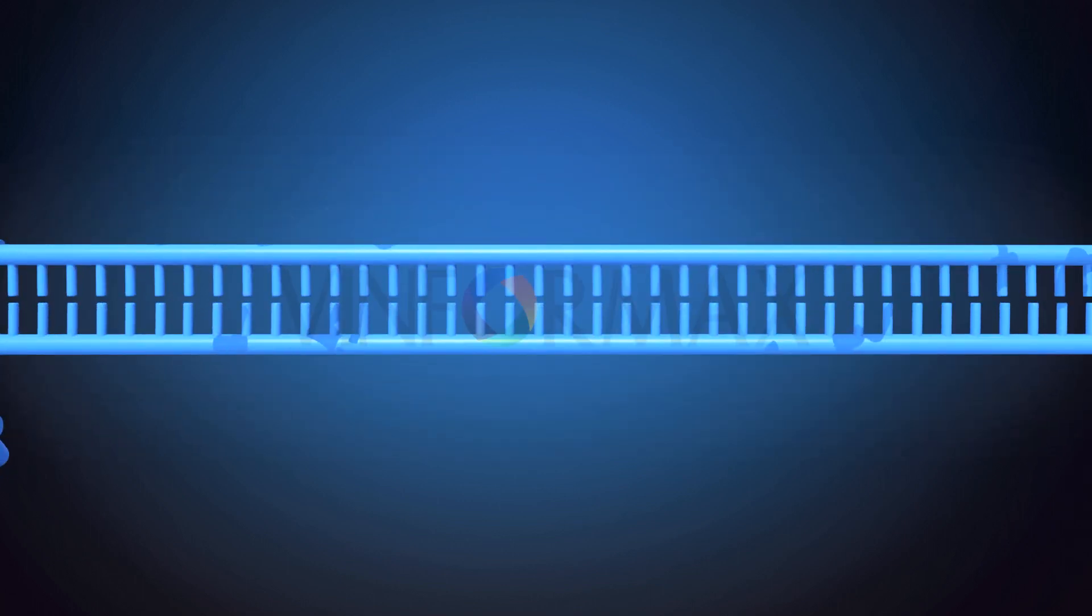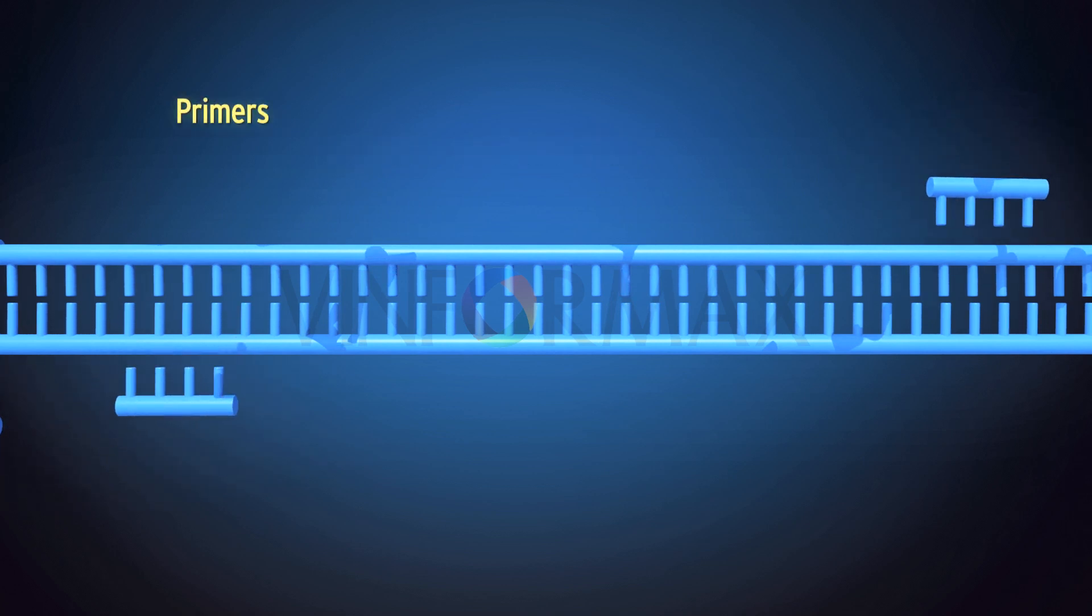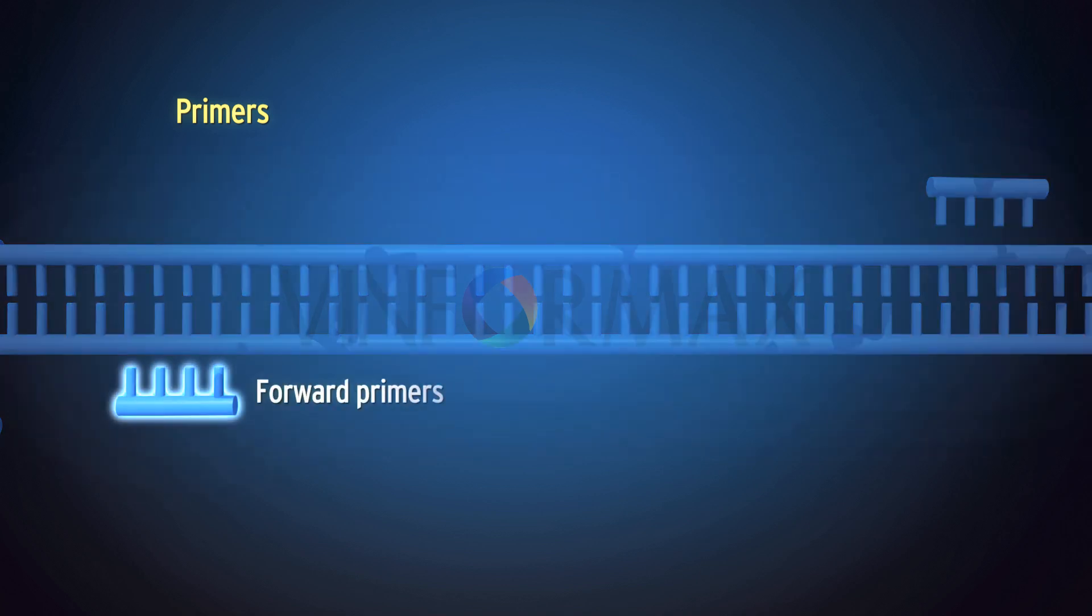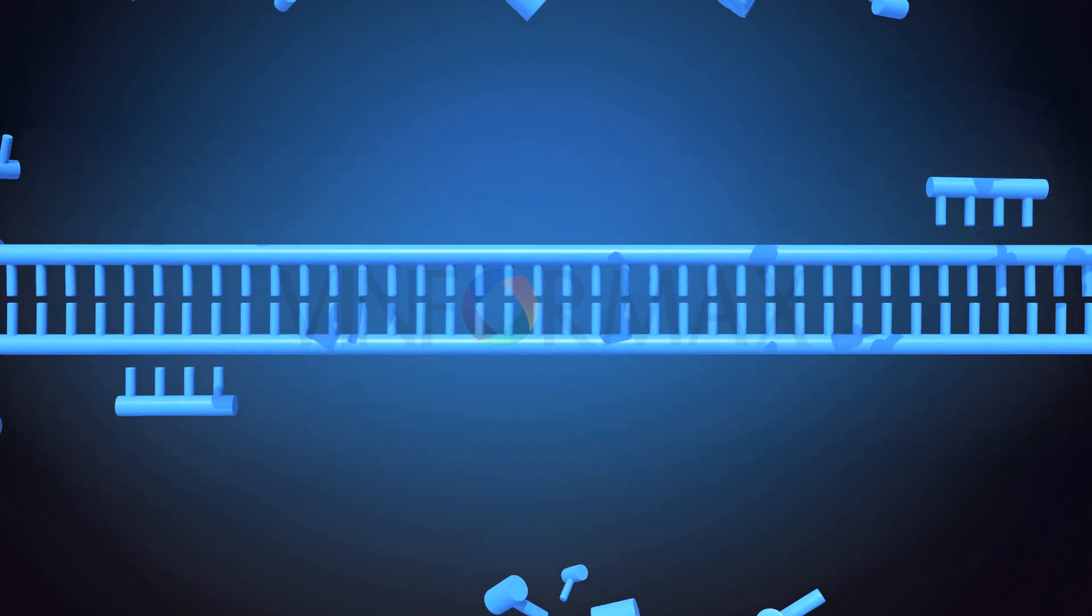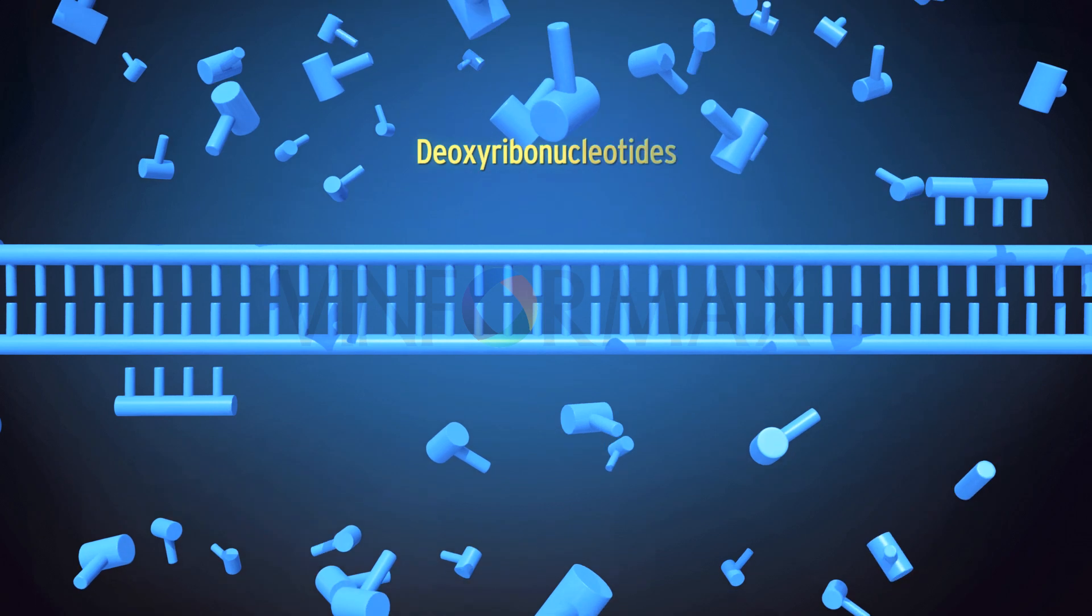A fragment of DNA about 100 or more base pairs in length acts as the template. We then add primers of length 17 to 30 nucleotides. The forward primers are complementary to the beginning of the template, and the backward primers are complementary to the end.